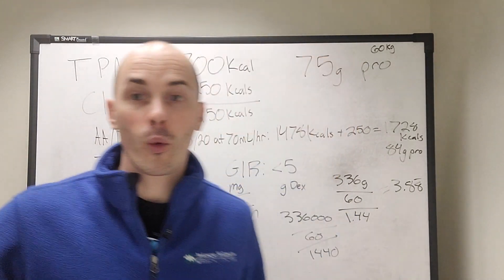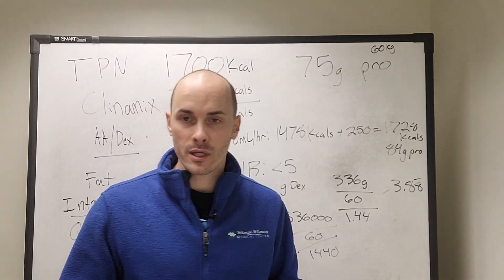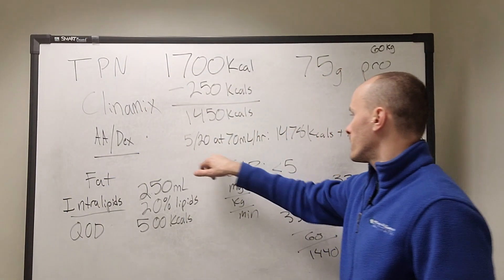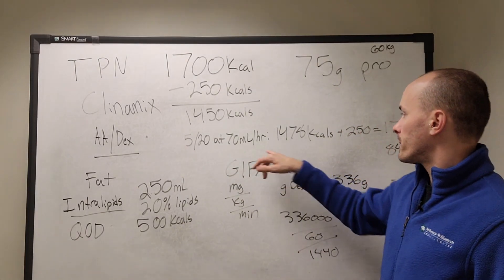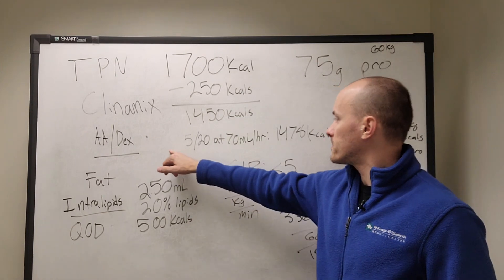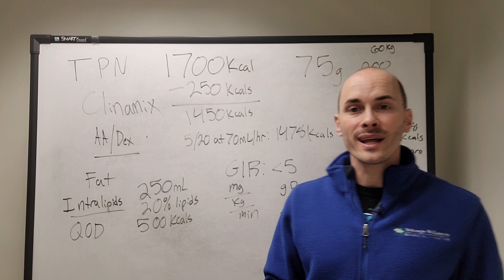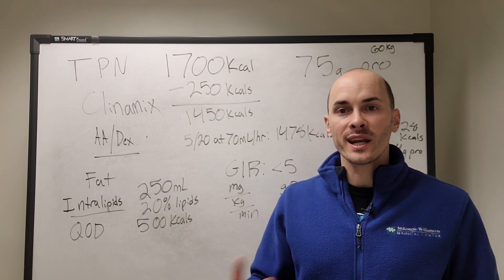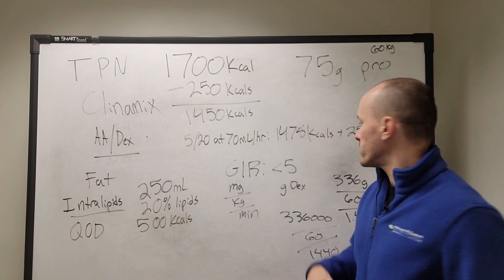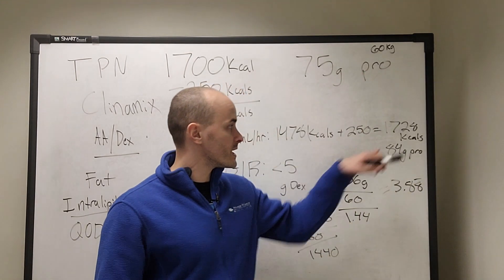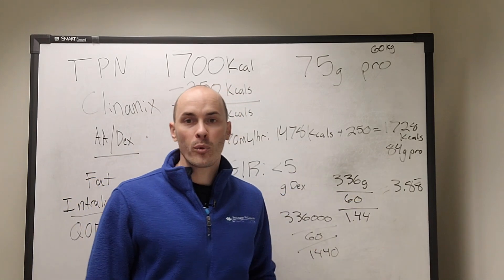So the recommendation is: TPN, Clinimix 520 solution at 70 mL/hr, with 250 mL of 20% intralipids every other day, to provide on average 1,728 calories, 84 grams of protein, and a GIR of 3.9.